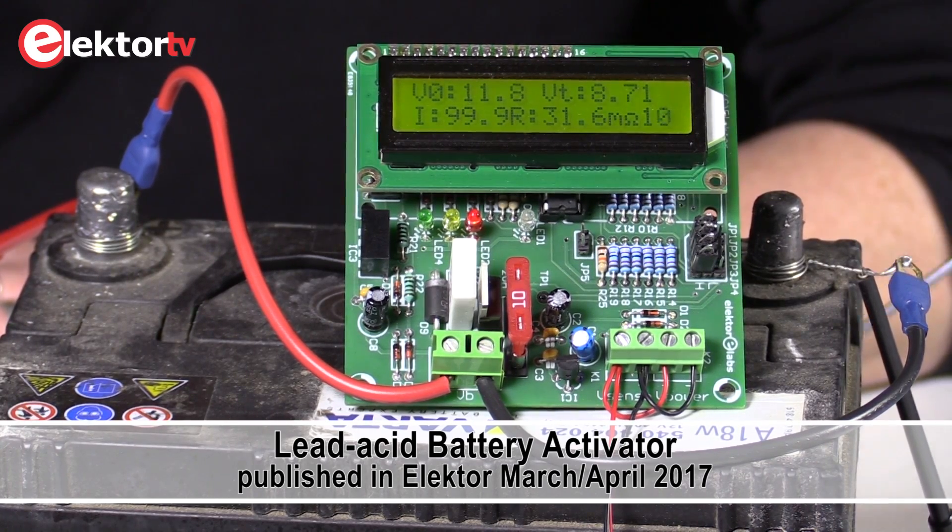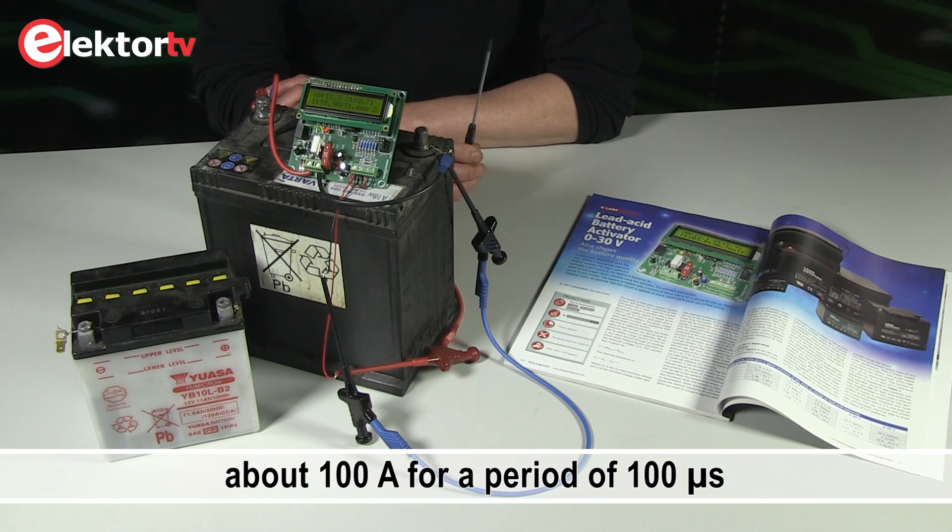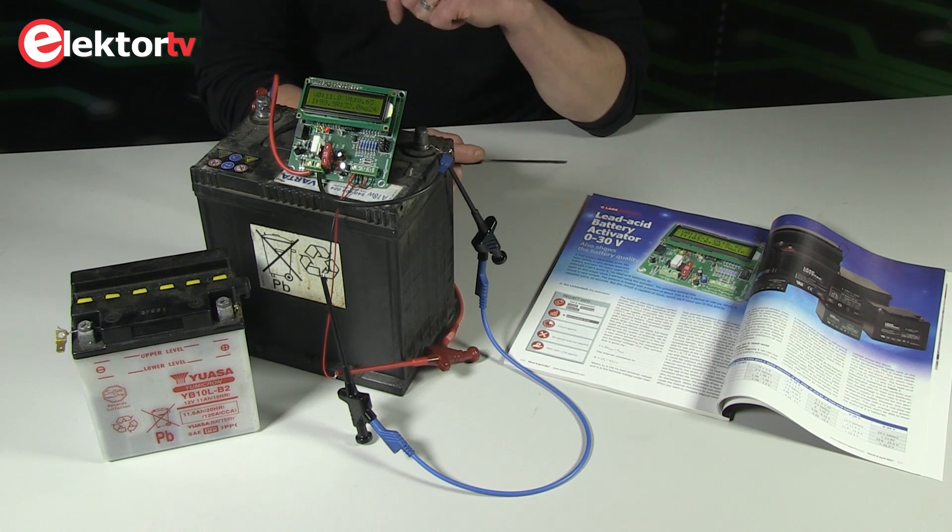The idea behind this project is to use short current pulses to revert the cell fading of the battery. This will improve the capacity of the battery.